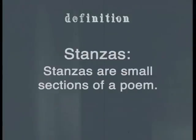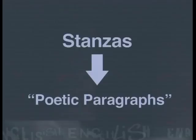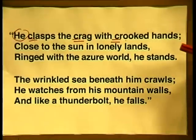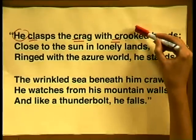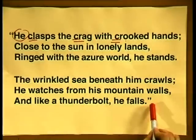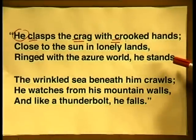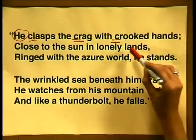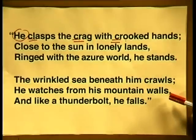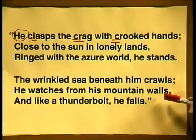Now let's look at the structure of this piece of writing that characterizes it as poetry. Stanzas are small sections of a poem. You may have heard of stanzas being referred to as verses — stanzas is the correct term in poetry. You can only refer to verses when you are describing a song. Another way of thinking about stanzas is that they are poetic paragraphs. This poem has two stanzas — two groups of lines, they are of equal length, and their rhyme is repeated. Look at the three lines in each stanza and notice the rhyme: 'hands' rhymes with 'lands' and with 'stands.' In the second stanza, 'crawls,' 'walls,' and 'falls' sound the same as one another too.